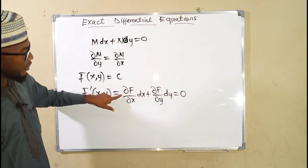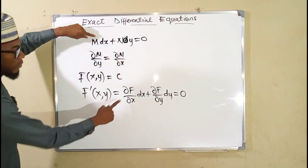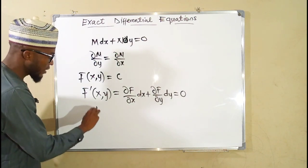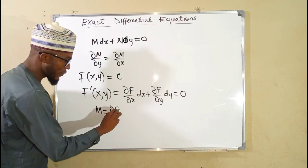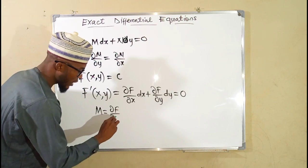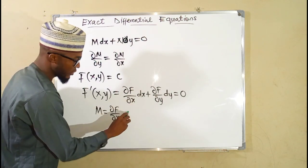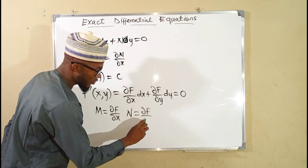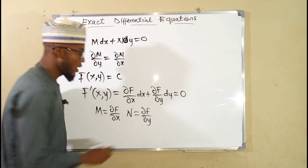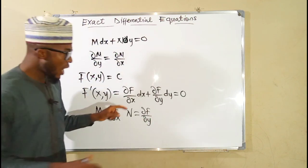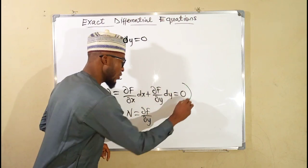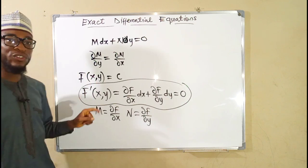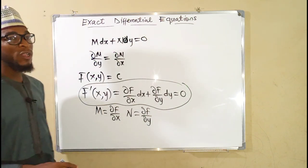By relating these two equations, you can see that M corresponds to the partial derivative of f with respect to x, and N corresponds to the partial derivative of f with respect to y. The question is: how can we solve this equation to obtain our original function? That is what I will show you today.